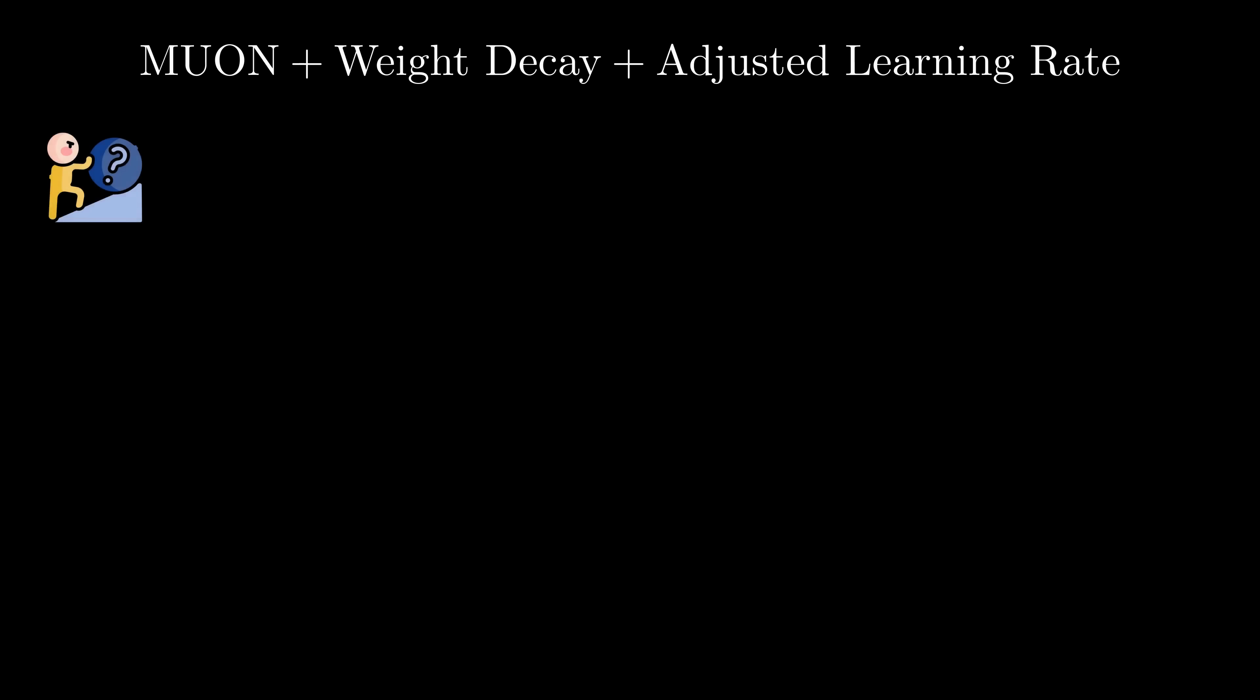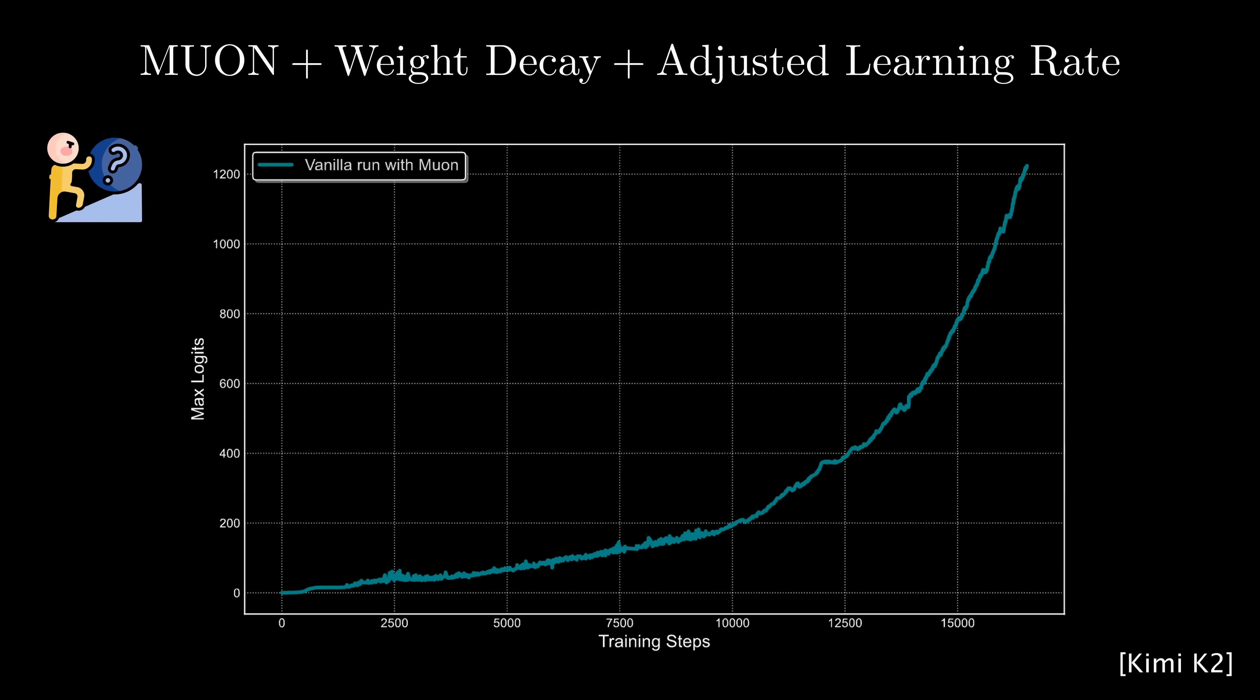But there is still a challenge. Researchers have observed that as training continues, the attention logits can grow larger and larger, which may cause the training process to become unstable. Where does that come from, and how can we fix it?